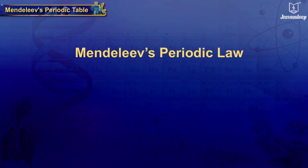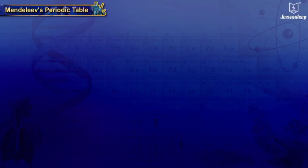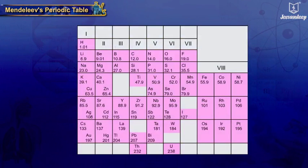Mendeleev's Periodic Law: The physical and chemical properties of elements are a periodic function of their atomic masses. The tabular arrangement of the elements based on this periodic law is called Mendeleev's Periodic Table.